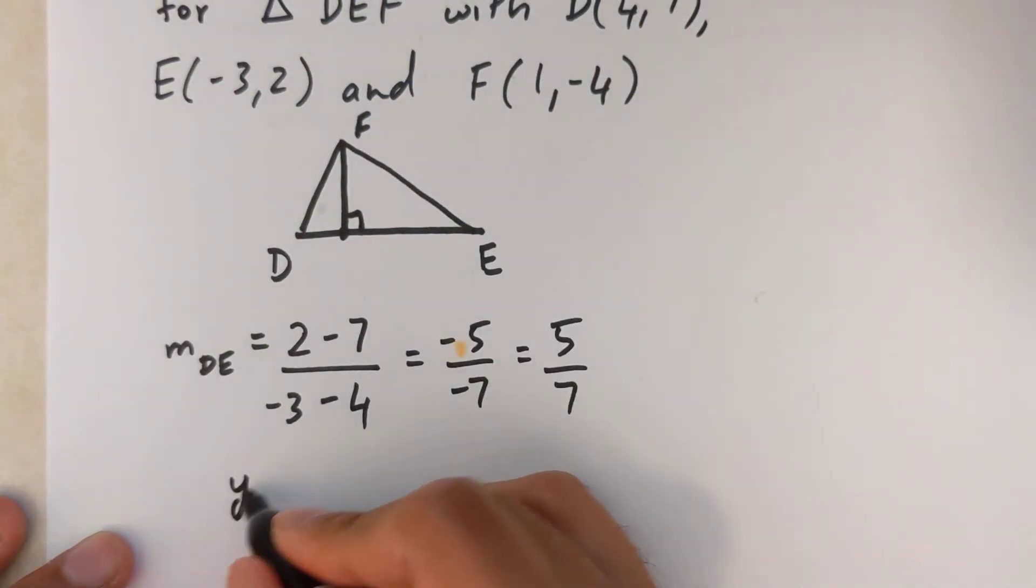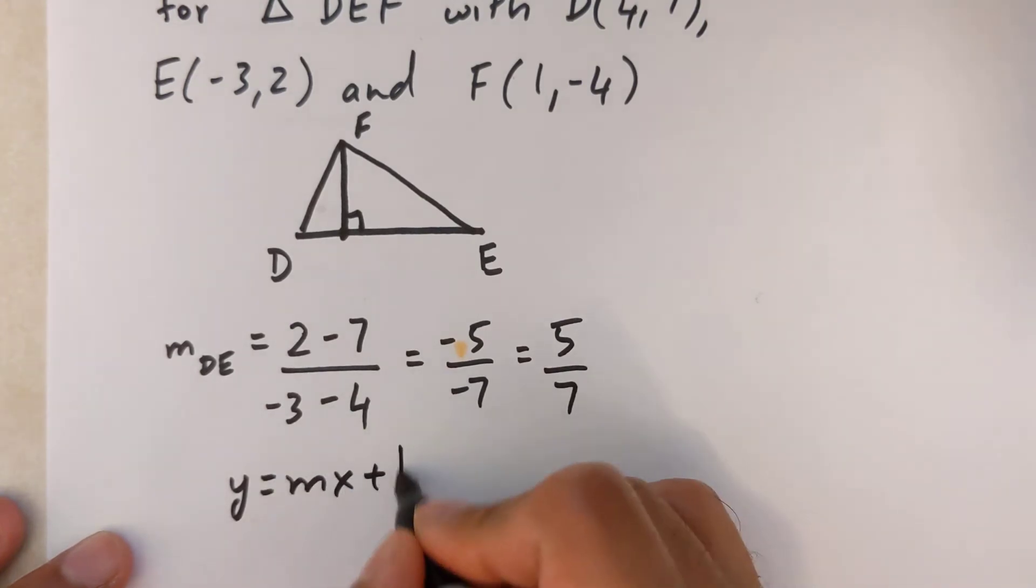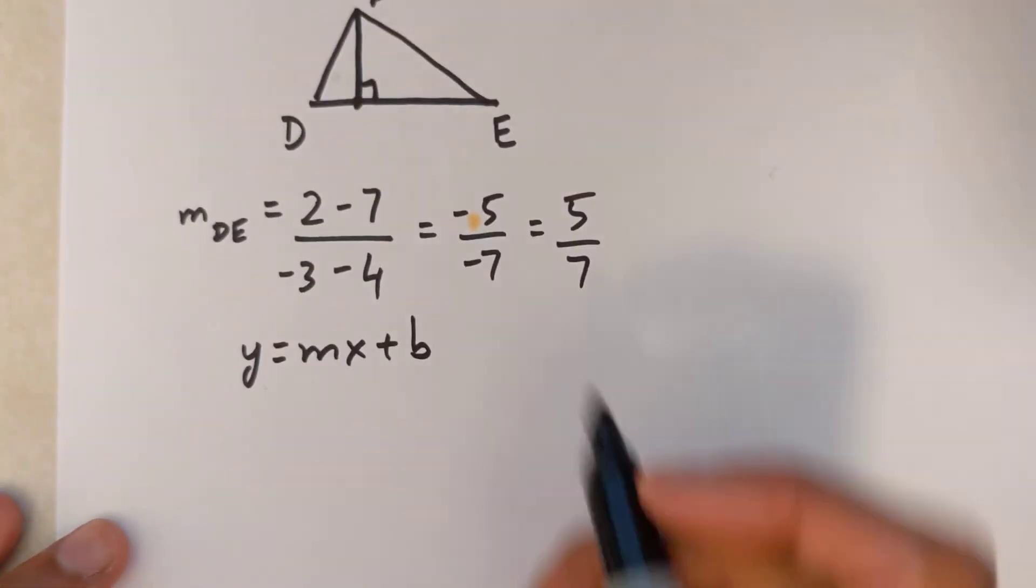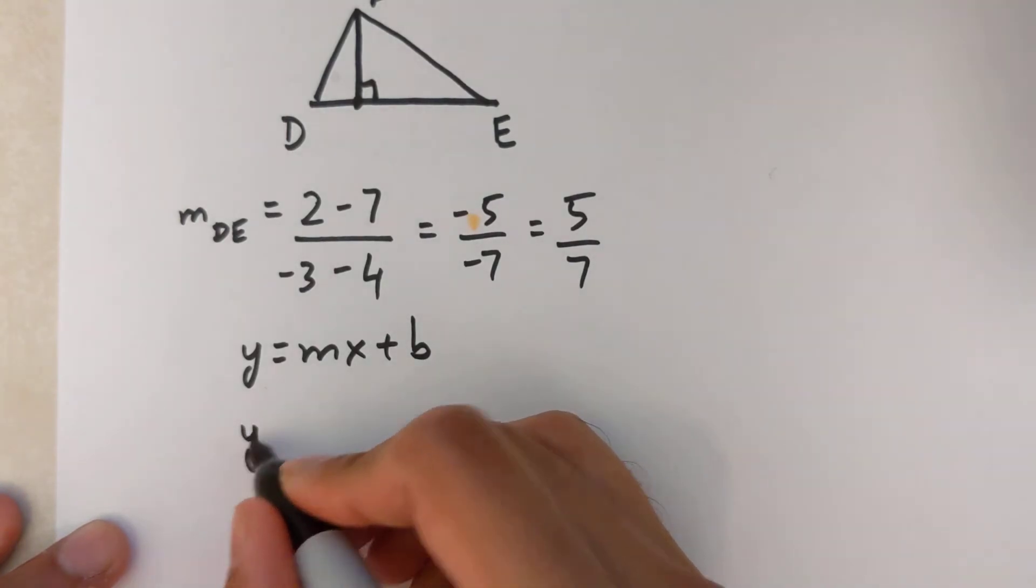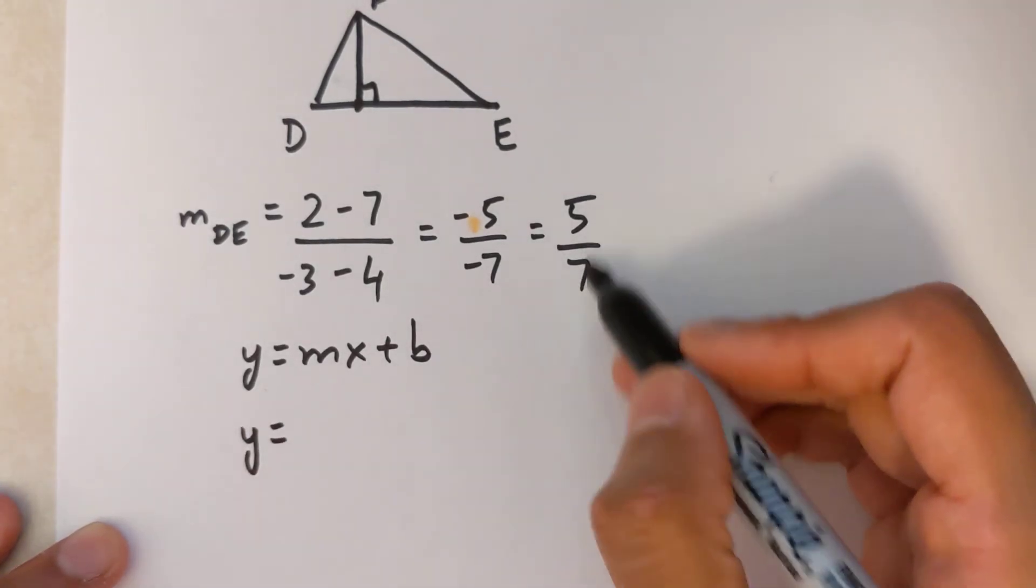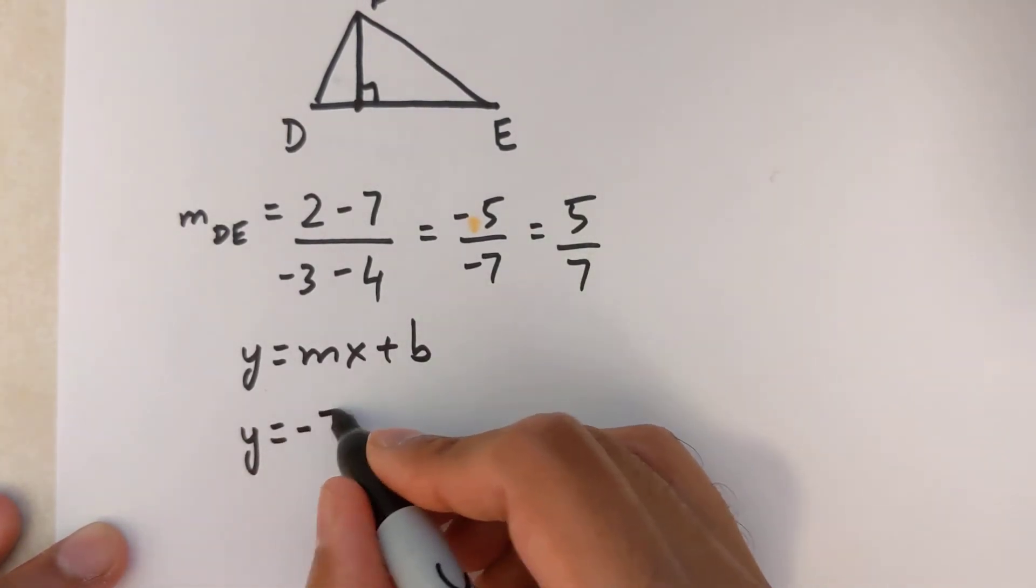I'm going to start with Y equals MX plus B. I know that the slope of this line is the negative reciprocal, so I'm going to flip this upside down and change the sign. So that's negative 7 over 5 X plus B.